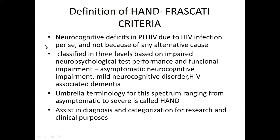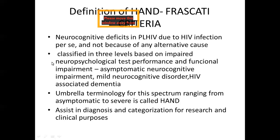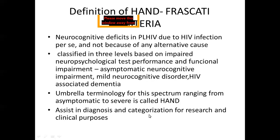The definition of HIV associated neurocognitive disorders uses the Frascati criteria, which are widely accepted. Neurocognitive deficits in PLHIV due to HIV infection per se, and not because of any alternative cause, are classified in three levels based on impaired neuropsychological test performance and functional impairment: asymptomatic neurocognitive impairment, mild neurocognitive disorder, and HIV associated dementia. HAND is an umbrella terminology for this spectrum ranging from asymptomatic to severe, helpful for diagnosis, categorization for research, and clinical purposes.